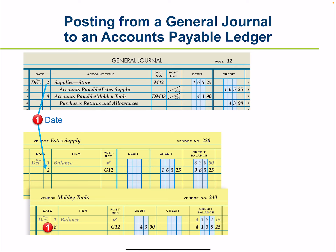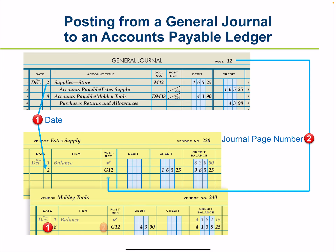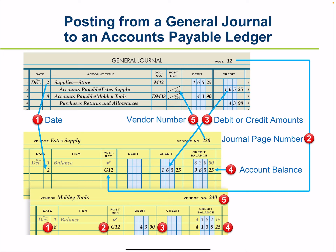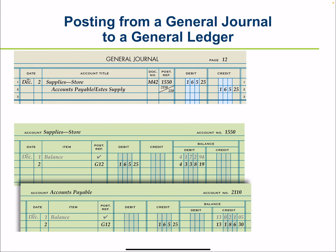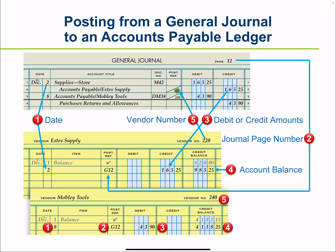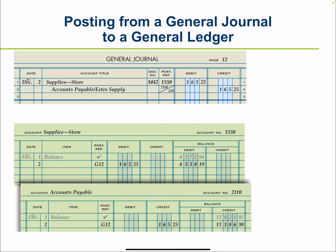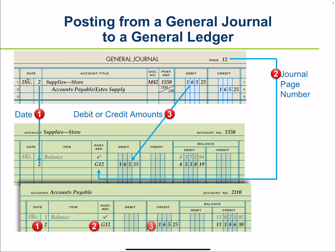When posting, you write the date, the journal page number, and the credit amount. Posting goes to the accounts payable ledger, and as soon as you post to your account, you write the account number — for example, 220 goes with that vendor. Then posting to the general ledger works the same way: write the date, journal page number, debit amount, credit amount, and vendor number. Each entry is posted twice — once to accounts payable and once to the vendor's subsidiary account.